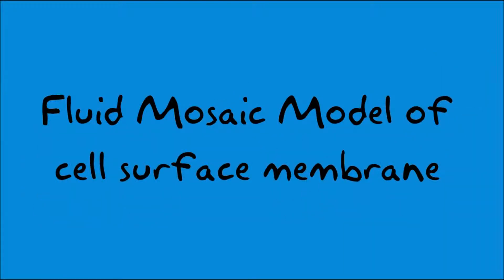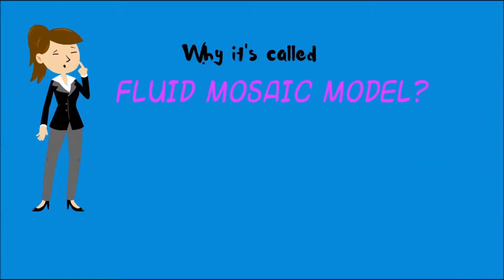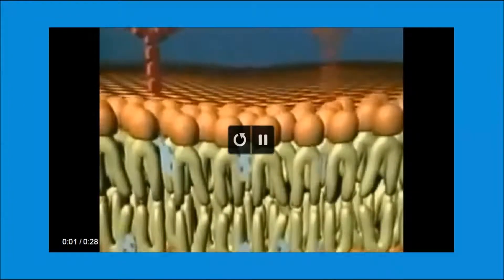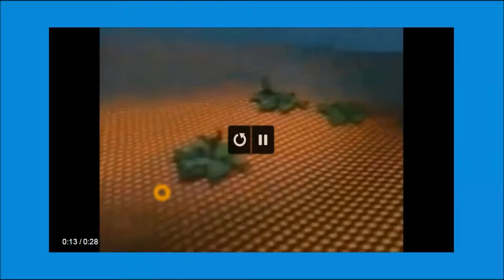In today's video we're going to learn about the fluid mosaic model of the cell surface membrane, also called the plasma membrane. Let's see a short video clip on how this membrane behaves. You can see the phospholipid molecules floating — they are responsible for the fluidity — and the green bits are the proteins embedded in the phospholipid layer in a mosaic pattern. That's why we call it the fluid mosaic model.